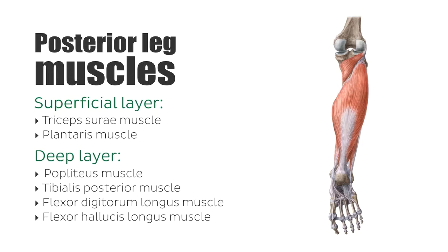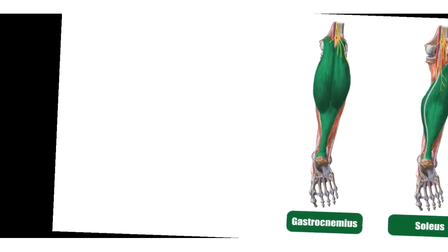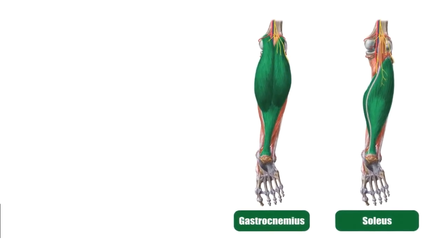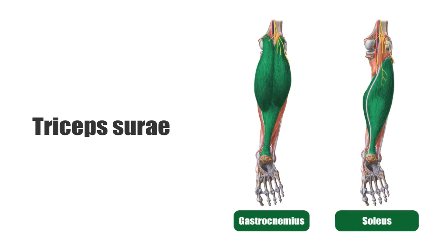Now these muscles are all considered part of the deep layer of the posterior leg muscles. We're going to move on to the very first muscle on our list. Right now on your screen you have two different muscles highlighted, but these are not two different muscles — these are two muscles that are part of the triceps surae.